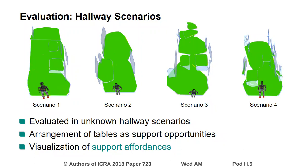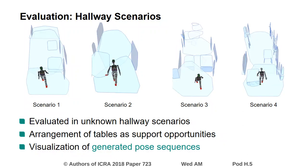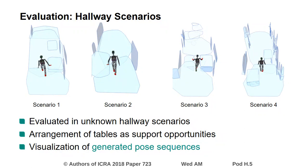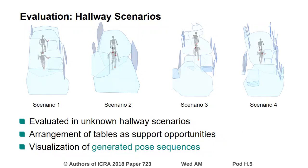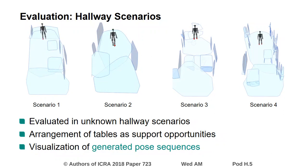The resulting post-sequences demonstrate that the planner is capable of generating whole-body multi-contact post-sequences for the locomotion of humanoid robots in unknown environments while utilizing available support affordances. End-effector contact is highlighted in red in the post-sequence visualizations. The runtime of our planning algorithm lies below 16 seconds for all examples.